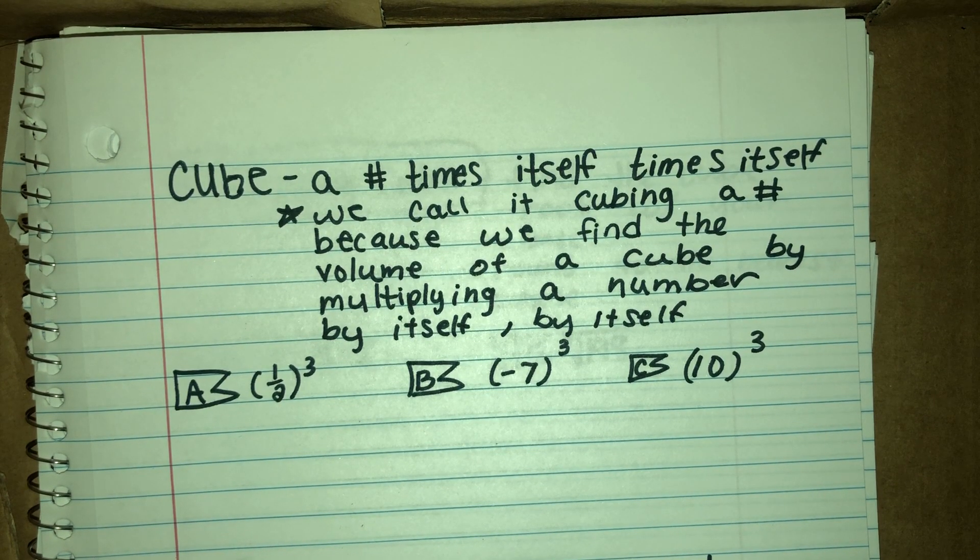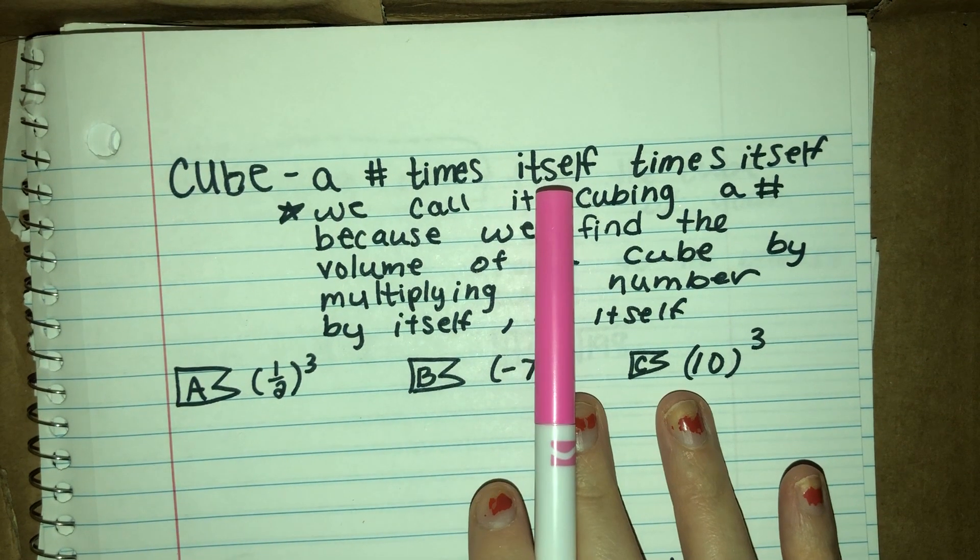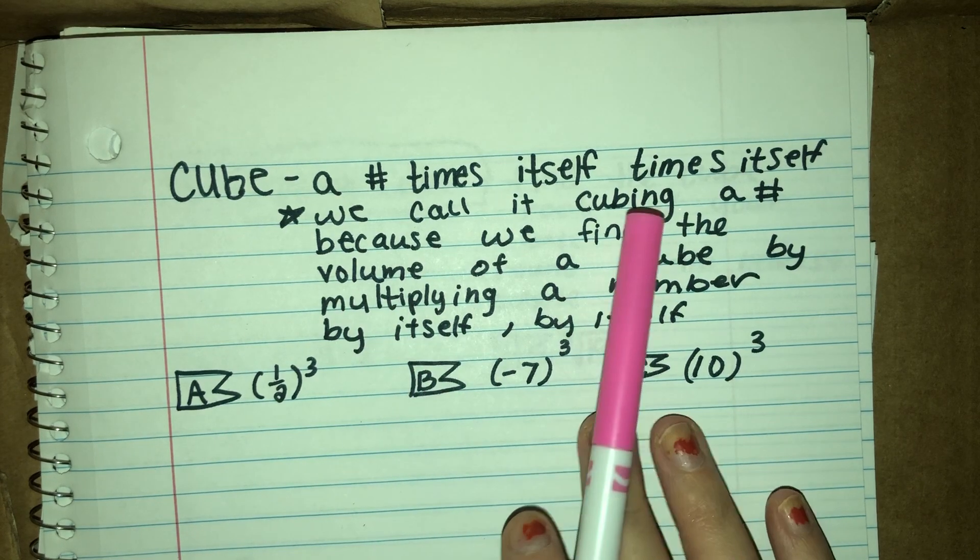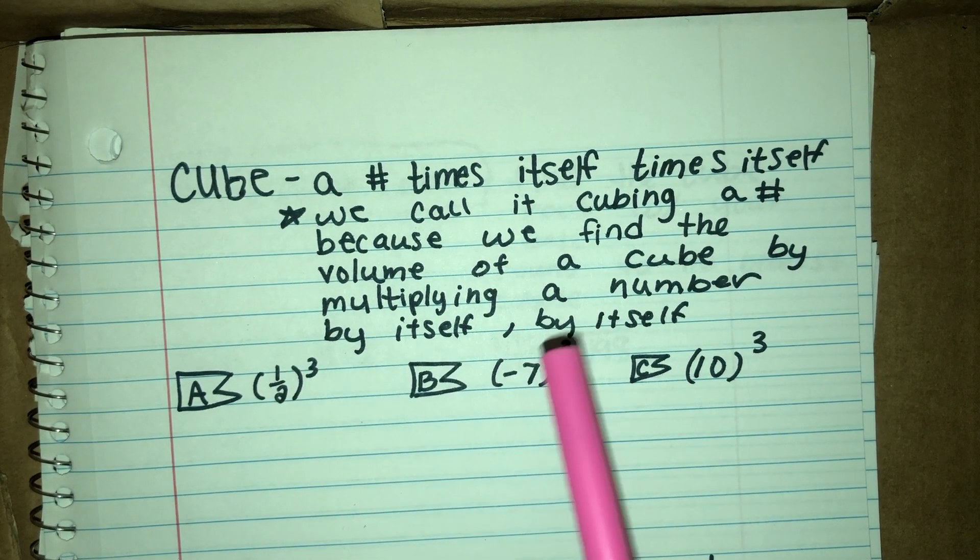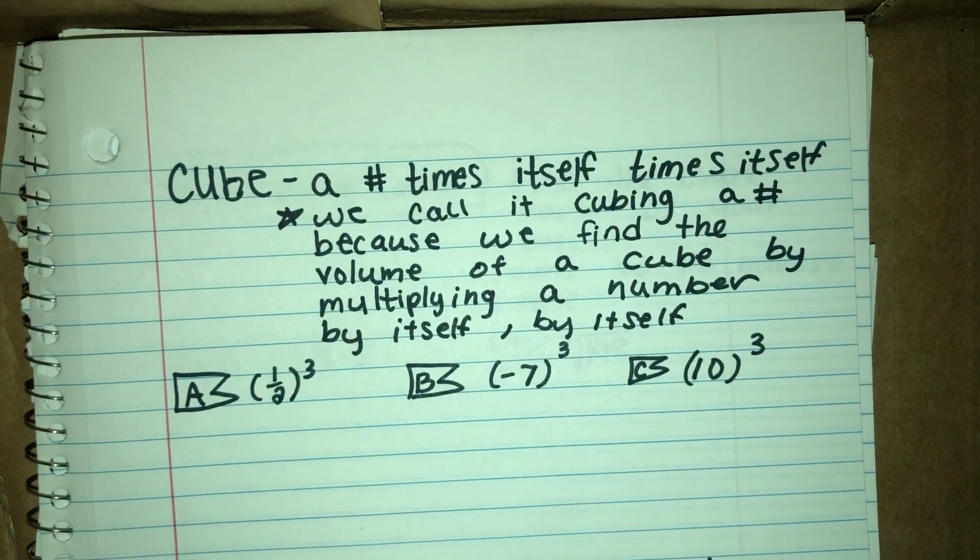Those are all about finding the cube of a number, and a cube is just a number times itself and then times itself again. We call it this because the way you find the volume of a cube is by multiplying one number by itself and then by itself again. Just like we call it a square based on the area, we call it a cube based on the volume.